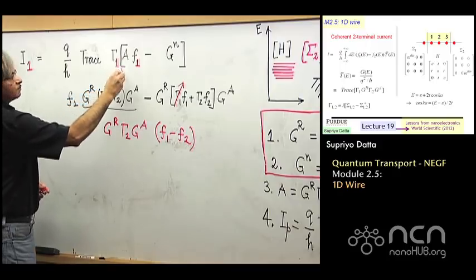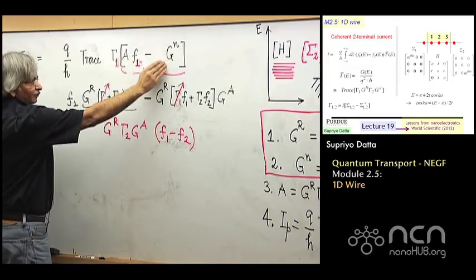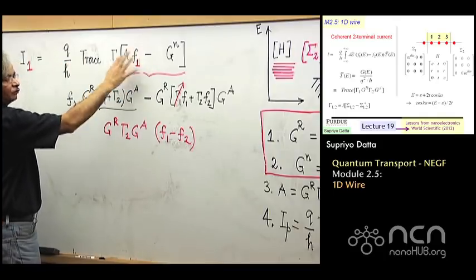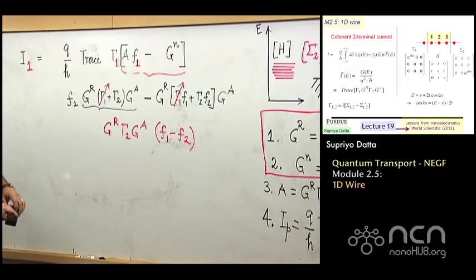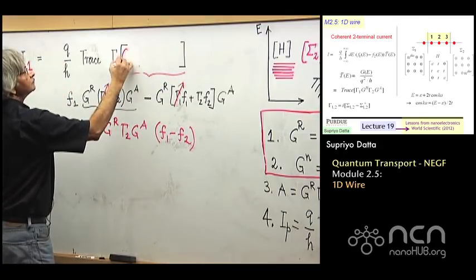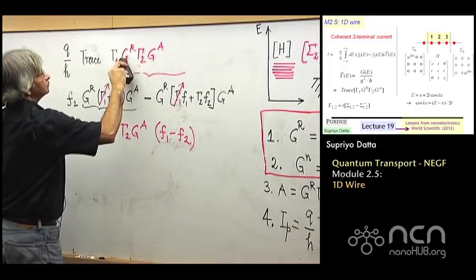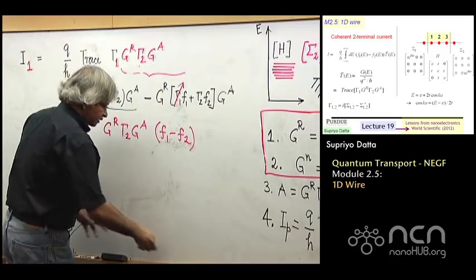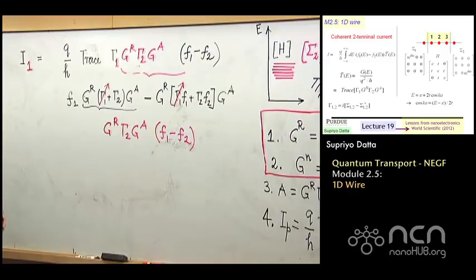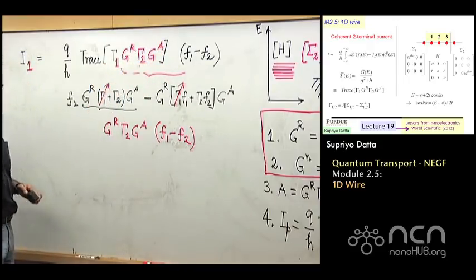Now if you look at the second one, this is GR gamma 2 GA. This is also GR gamma 2 GA. But here it's multiplied by F1 and here it's multiplied by F2, and so they don't cancel. So overall then, you could write this as GR gamma 2 GA multiplied by F1 minus F2. So what we did was just played around with this part, F1 minus Gn. And remember, the way we think about this is, this is like the electron density inside the channel. This is kind of what it should be if it was in equilibrium with contact 1. And if there's a difference, there will be a current flow.